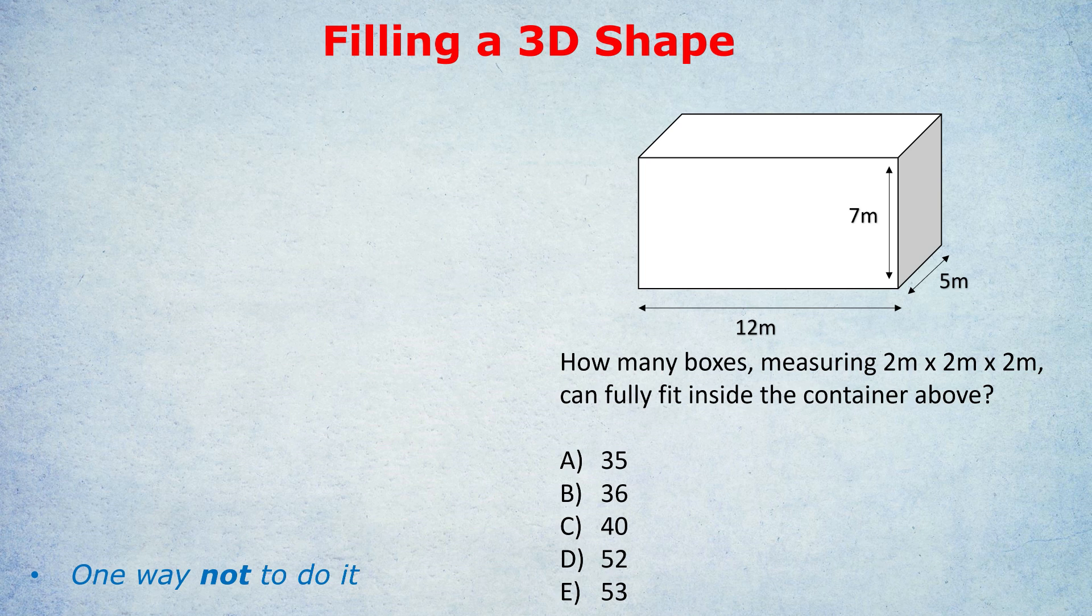But we're dealing with physical solid boxes that can't be chopped up. So what's the correct way of answering this question? The correct way is to look dimension by dimension at how many boxes can fit in. What do I mean by that? Let's take the first dimension, the width. That's 12 meters.